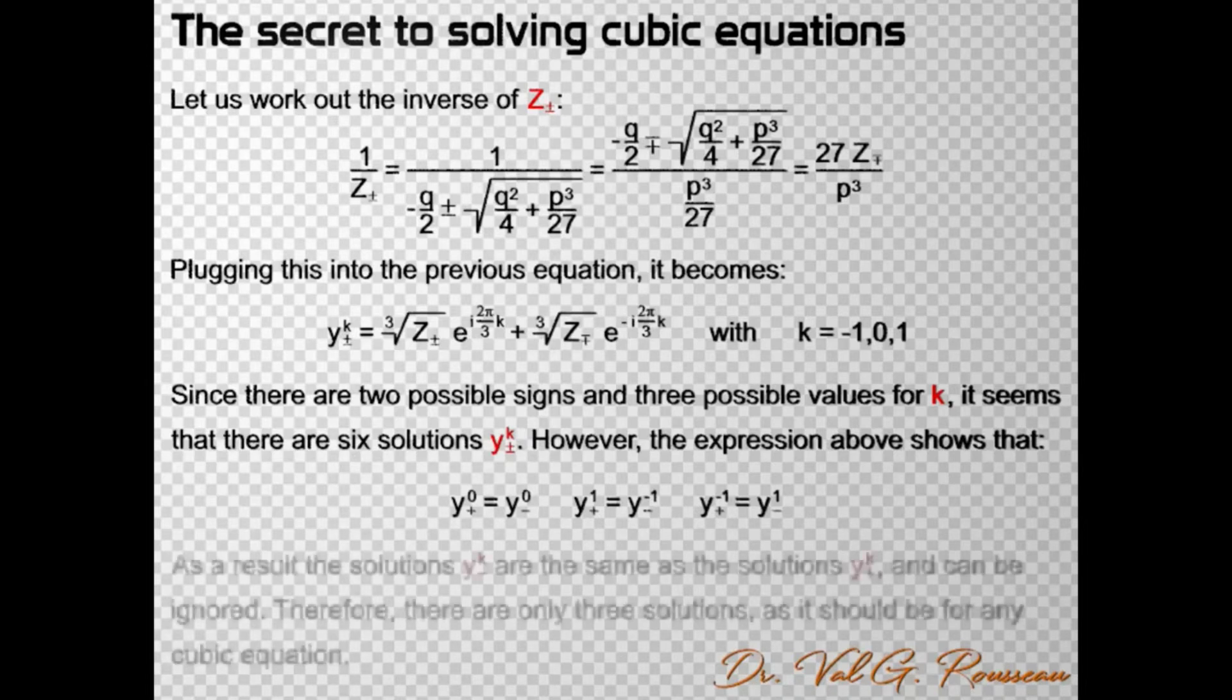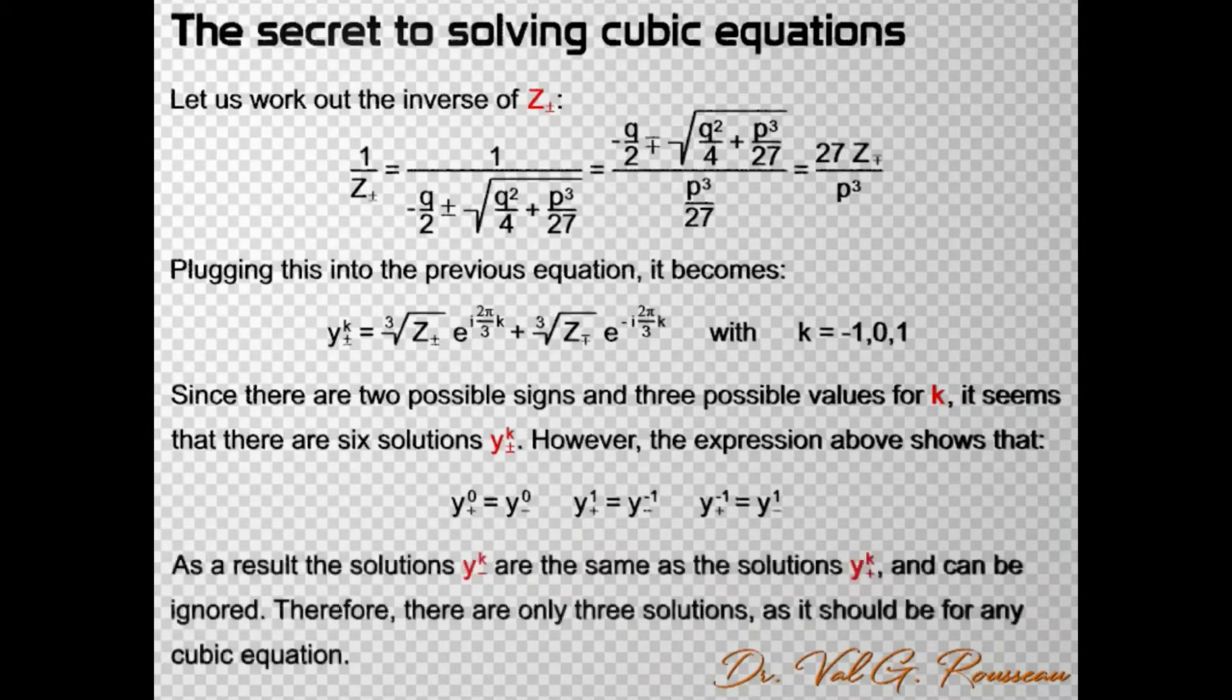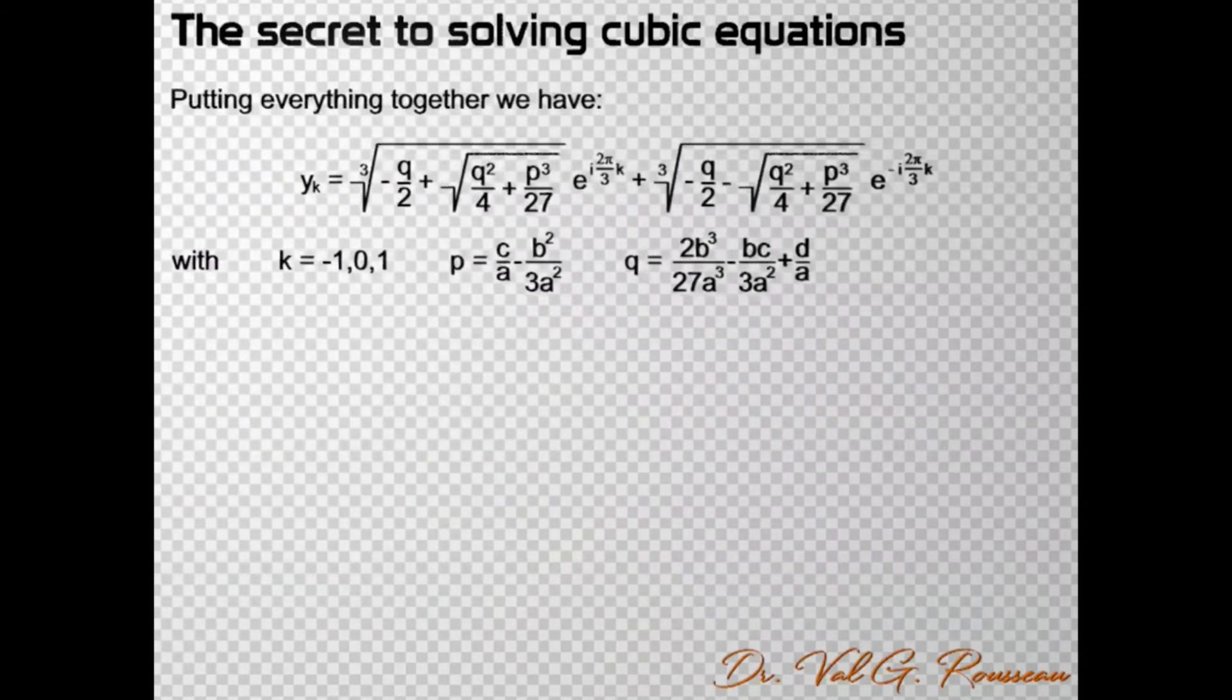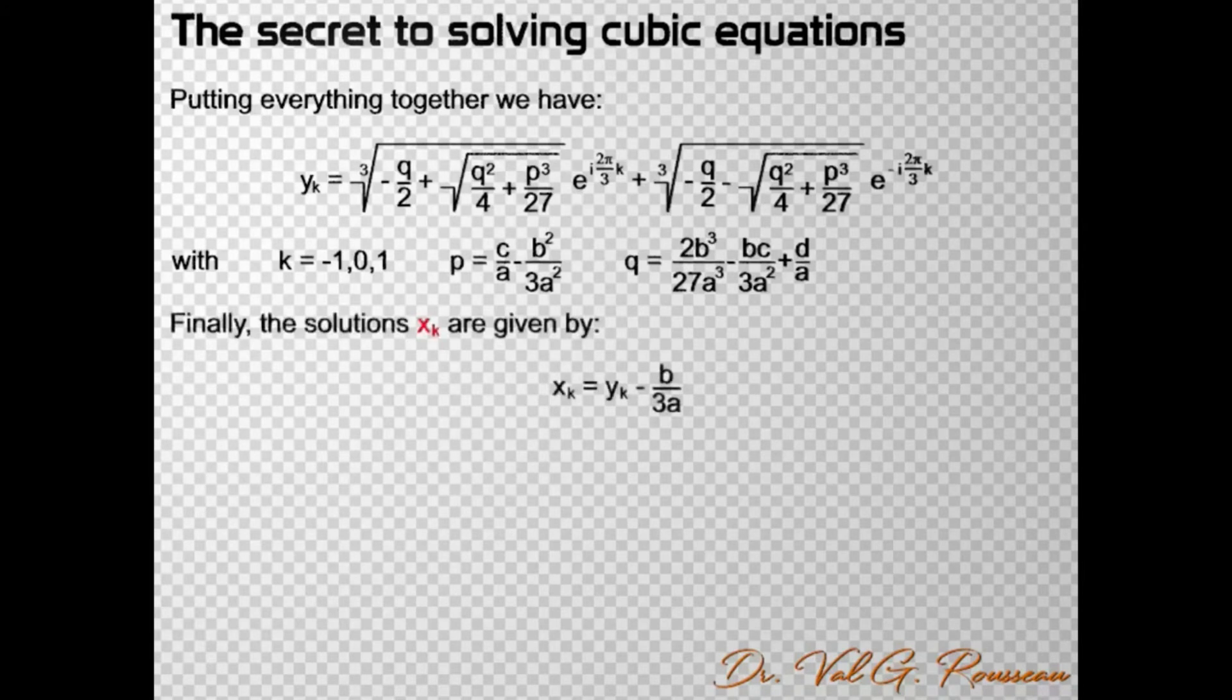This means that it doesn't matter which sign we choose for z. Thus, in the following we can ignore the solution for z with the minus sign and we are left with the three solutions that we need. This way, we can write the explicit solution for y which depends on k but no longer on any choice of a sign. And finally, the solutions for x are obtained by subtracting b/3a.